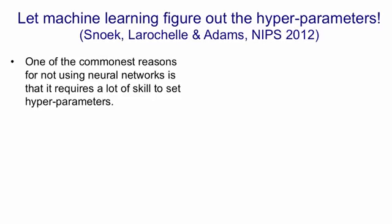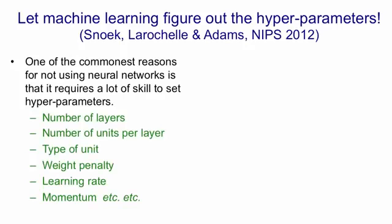This is actually a pretty good reason. If you don't have much experience, it's easy to get stuck using a completely wrong value for one of the hyperparameters, and then nothing works. You have to set things like the number of layers, the number of units per layer, what types of units to use, the weight penalty, the learning rate, the momentum, and so on. If you use a learning rate that's 100 times too big or 100 times too small, your network simply won't work.